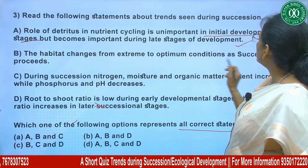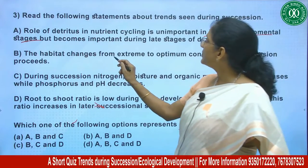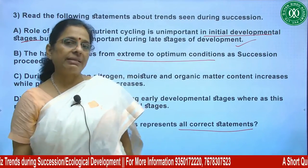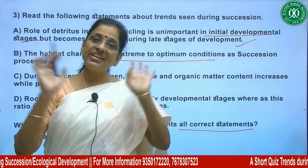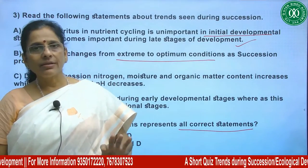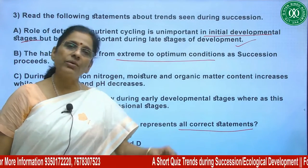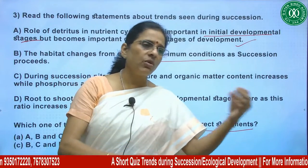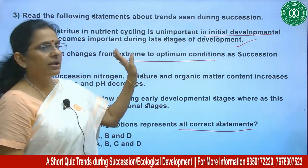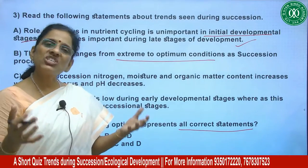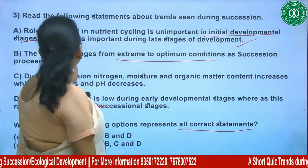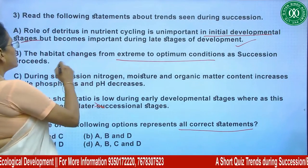Second statement: the habitat changes from extreme to optimum conditions as succession proceeds. As ecological development occurs, conditions shift from extreme to optimum — neither too dry nor too wet, moderate and suitable. This is a known trend in succession. In optimum conditions more species can survive, which is why mature stages have higher species diversity than initial stages. So this is correct.